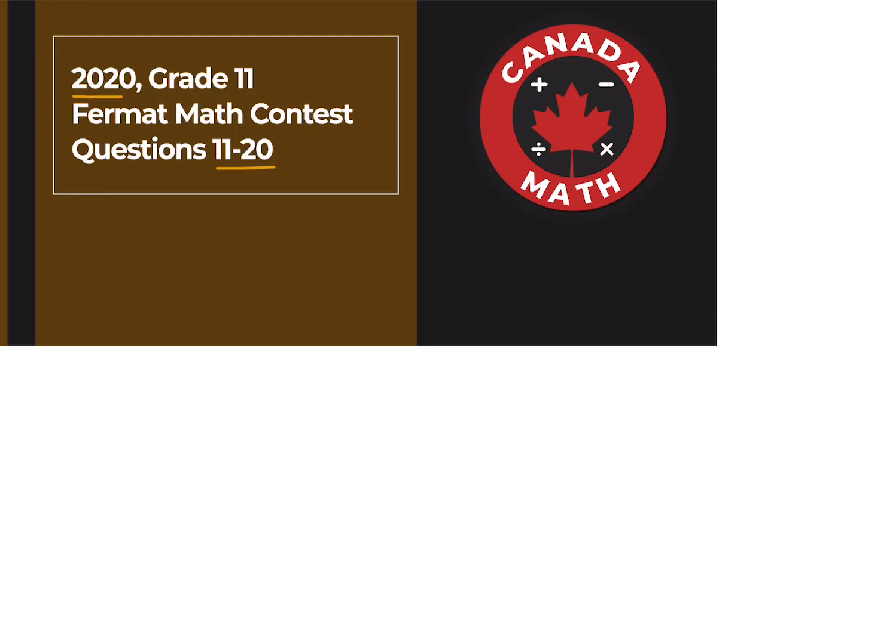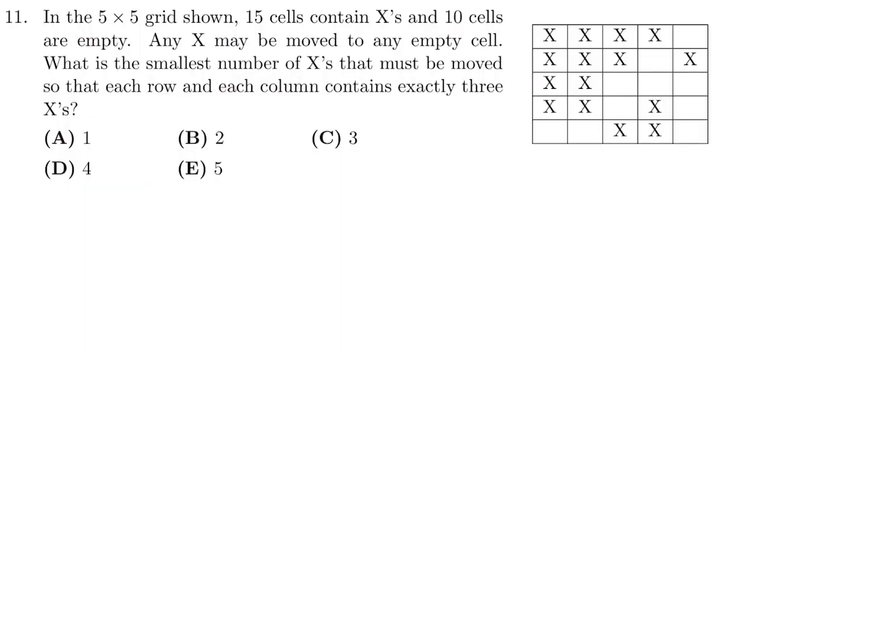Questions 11 through 20 on the 2020 Grade 11 Fermat Math Contest. In the 5x5 grid shown, 15 cells contain X's and 10 cells are empty. Any X may be moved to an empty cell. What is the smallest number of X's that must be moved so that each row and each column contains exactly 3 X's?